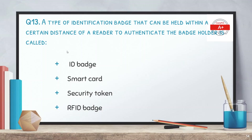Question 13: A type of identification badge that can be held within a certain distance of a reader to authenticate the badge holder is called — options: ID badge, smart card, security token, or RFID badge. The correct answer is RFID badge.